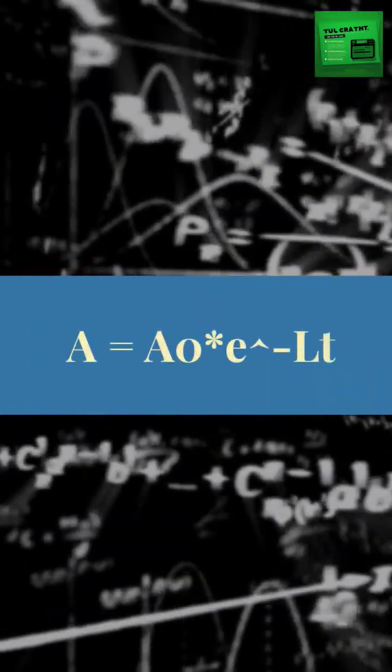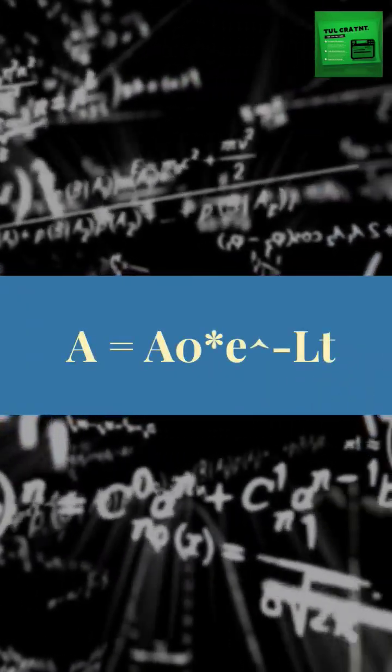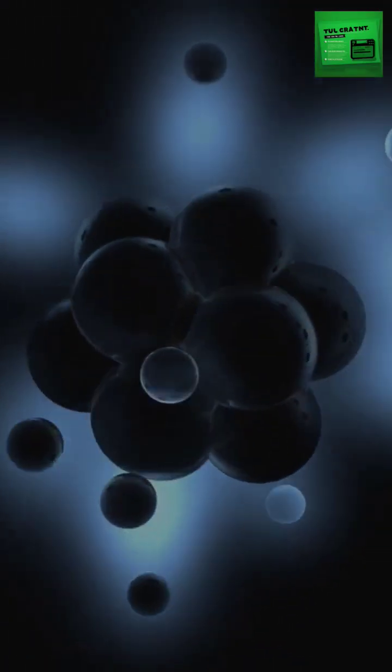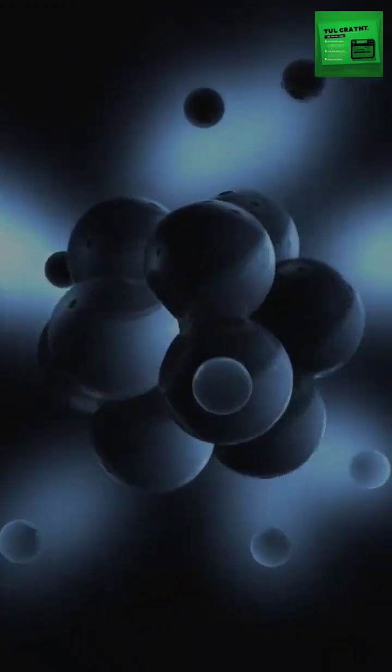This non-linear relationship can be described using the equation A equals A-O-E-L-T. This equation is found in various contexts, such as atomic decay and planetary distances.